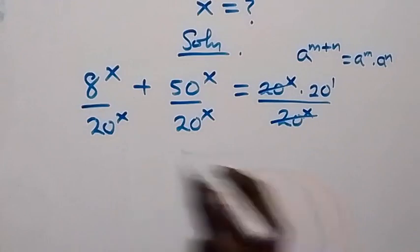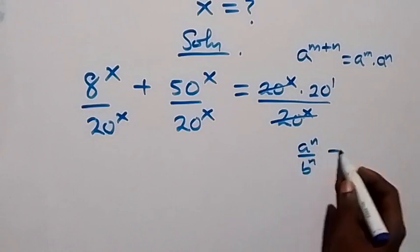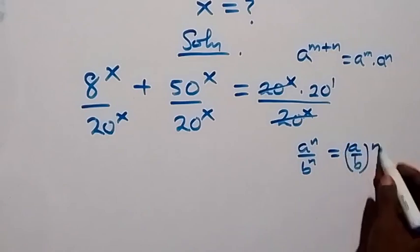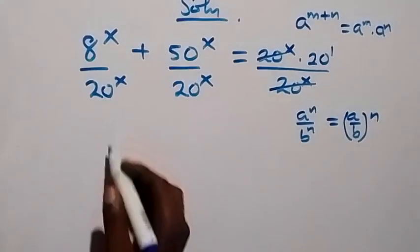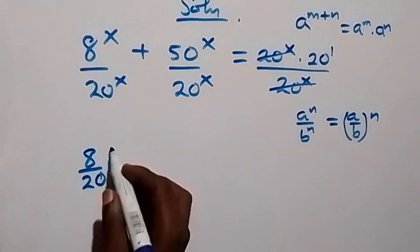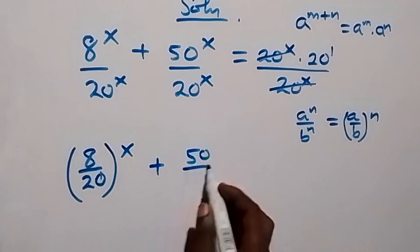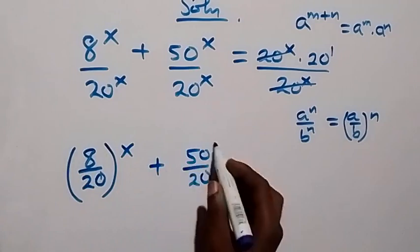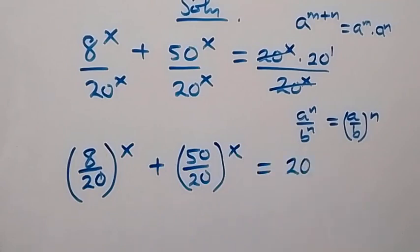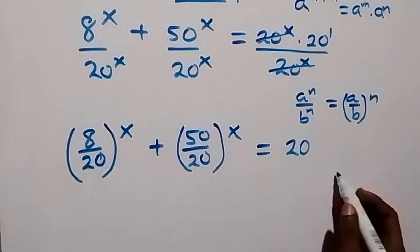Then what we have here, we can write it using the rule: a raised to power n over b raised to power n is the same thing as (a over b) raised to power n. Then here we now have 8 raised to power x plus 50 raised to power x, all over 20 raised to power x, equals 20. Then we can reduce the fractions — 8 over 20 and 50 over 20.